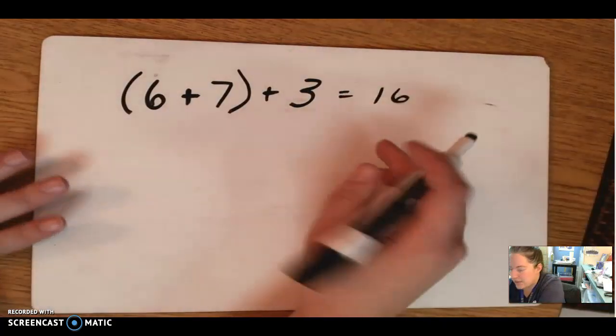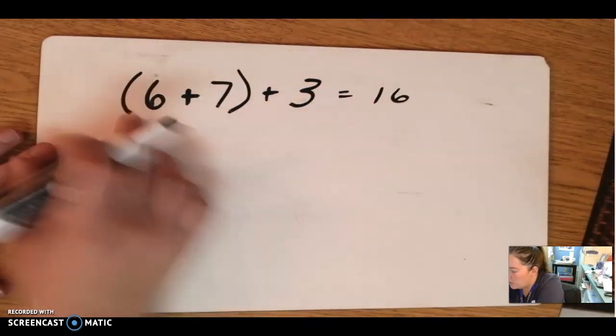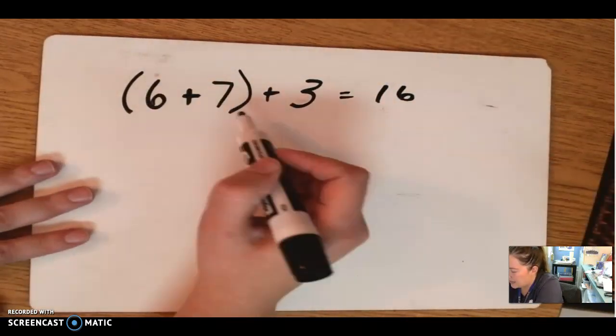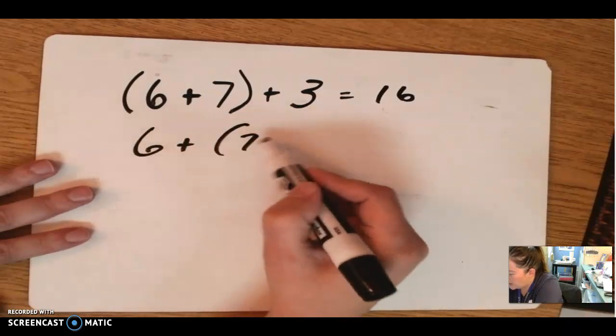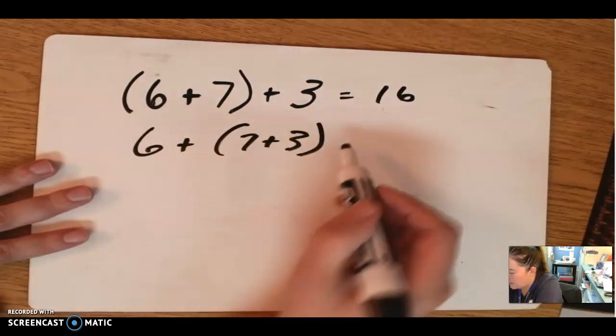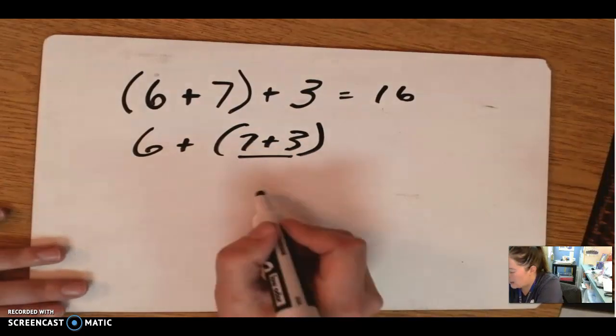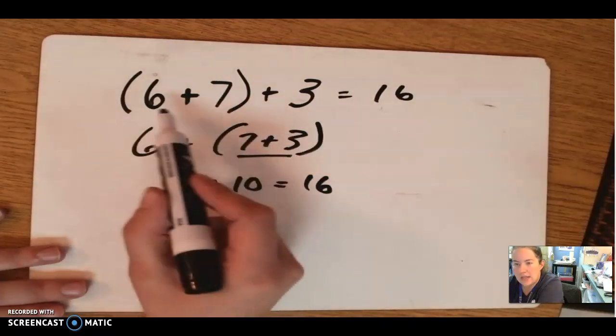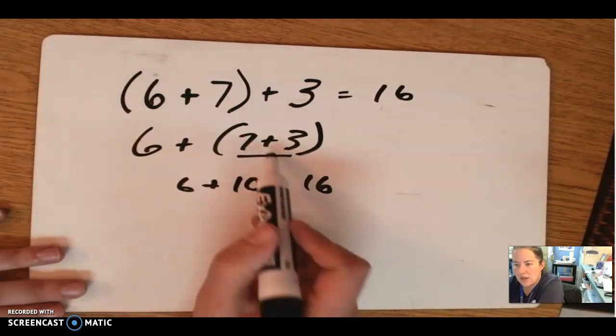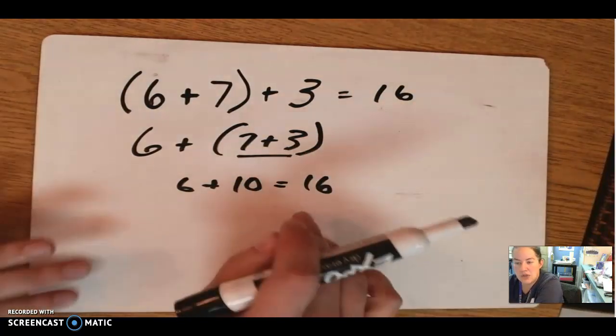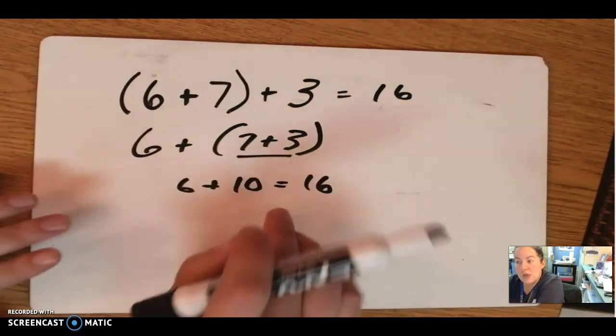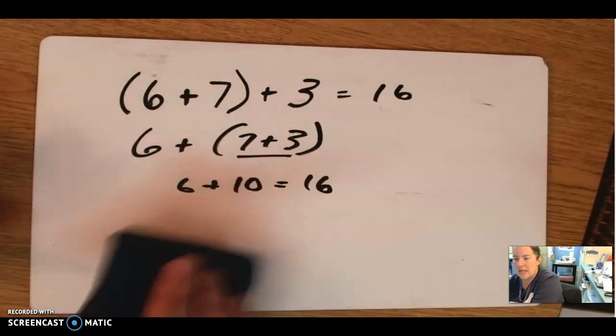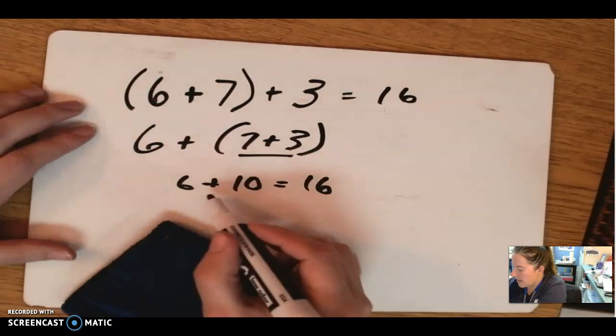Remember in the past, we learned that you can move these numbers around, right? You can shift them. So you don't have to do 6 plus 7 first. You could do 7 plus 3 first if you wanted to because I know 7 plus 3 is 10. And 10 plus 6 is a whole lot easier than sitting here and doing 6 plus 7 plus 3. So you can shift the numbers around. You can do that with whole numbers, but did you know you could also do that with fractions?